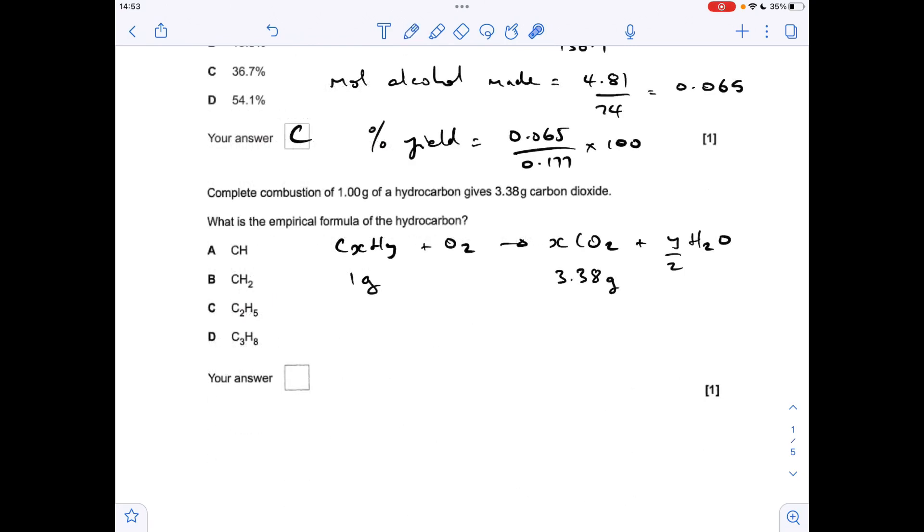Moving on to the last of the multiple choice questions, I think this is pretty tricky. Hopefully you can see what I've done - I've come up with a generic equation for the combustion of a hydrocarbon. For every mole of carbon in the hydrocarbon you get the same number of moles of CO₂, that's all we're really interested in. We also know that we had a gram of hydrocarbon and we've made 3.38 grams of CO₂.